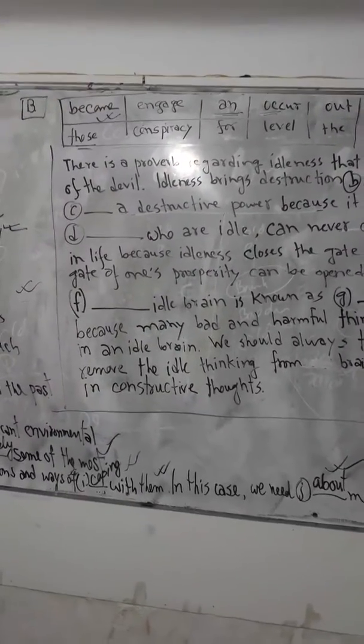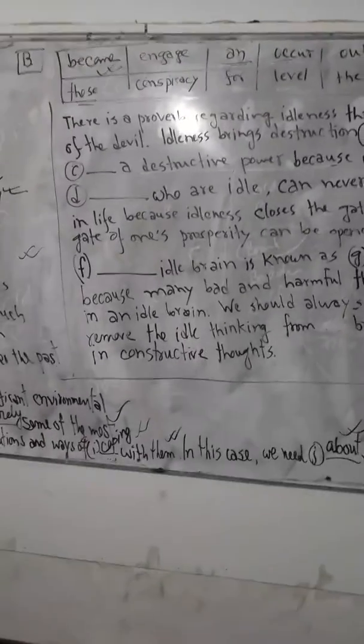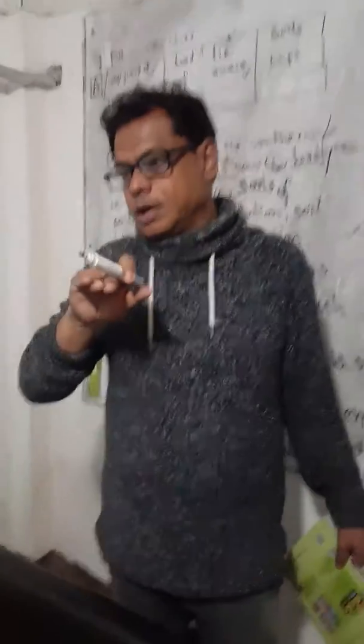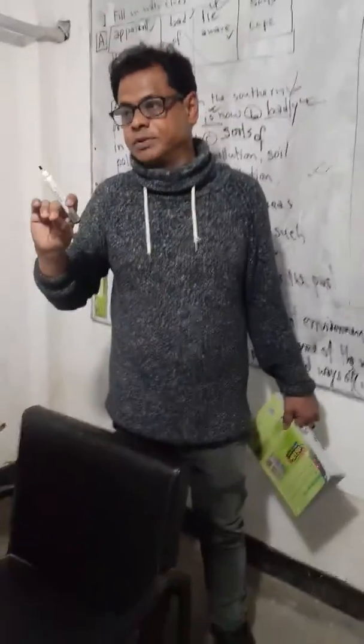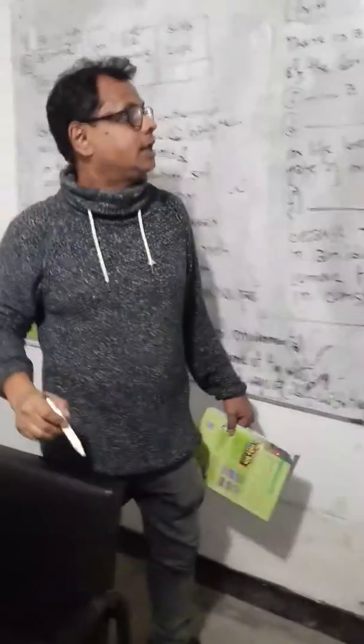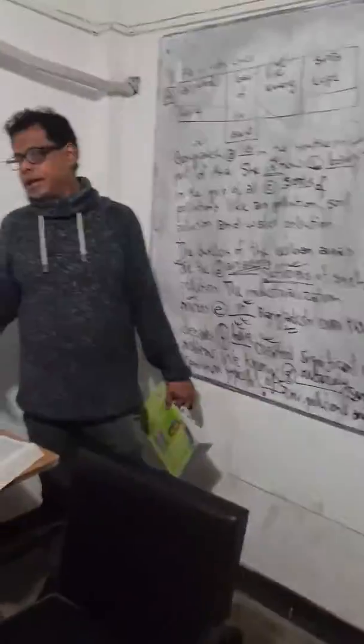Continuing the word list: 'another' — a different article used before consonant sounds; 'those' — a pronoun; 'conspiracy' — a noun meaning having something odd against someone; 'level' — the state of something or activities; 'the' — the definite article; and 'to' — a preposition.